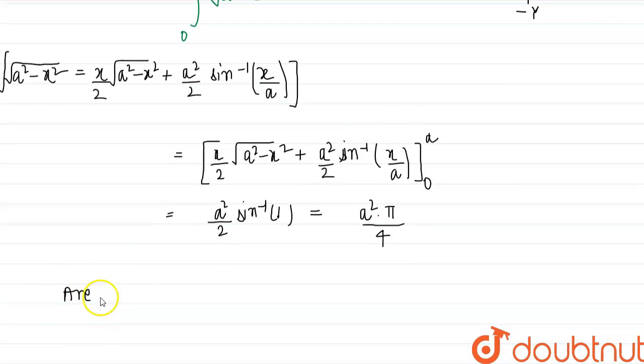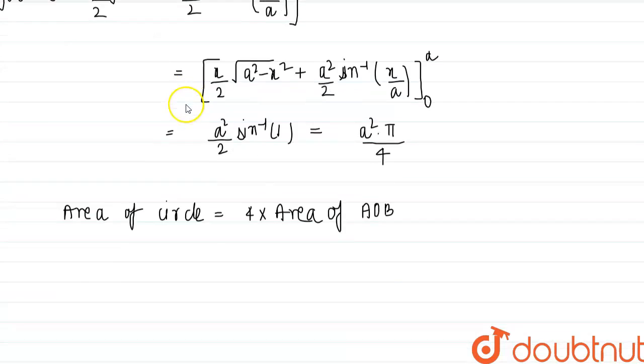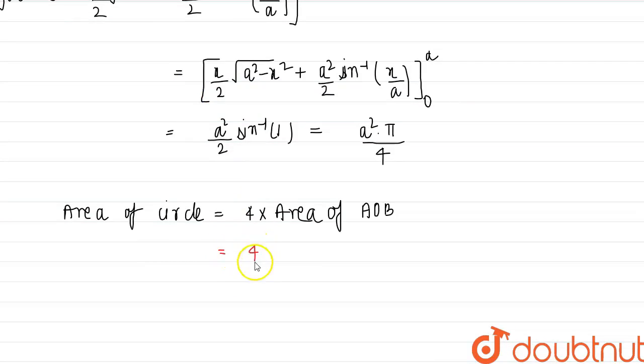So area of circle will be equal to 4 times the area of AOB, which is 4 × πa²/4. So this is equal to πa², which is the area of the circle.